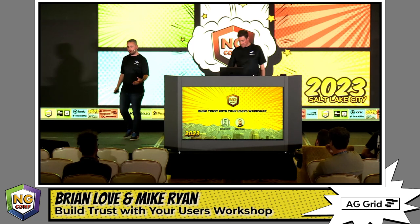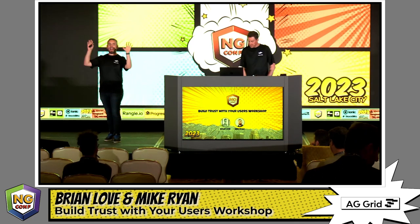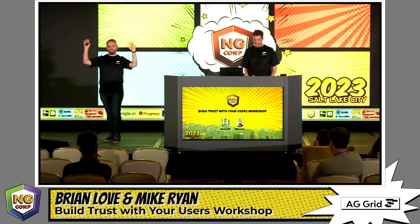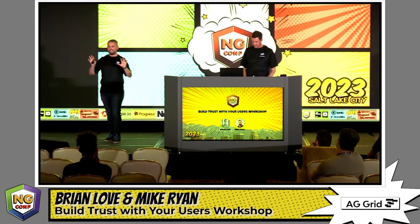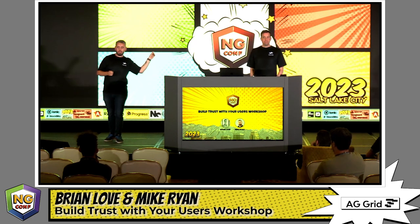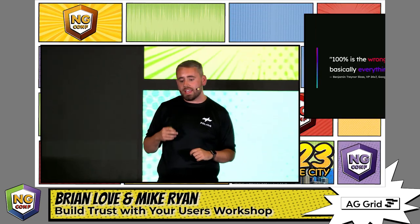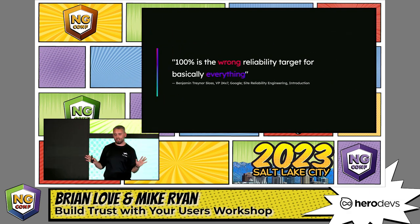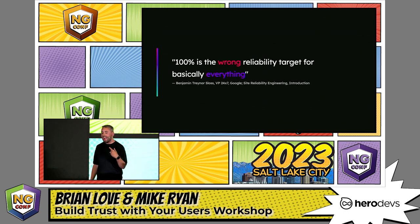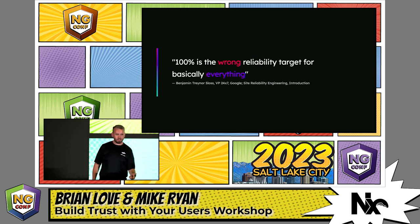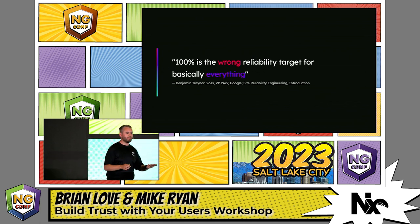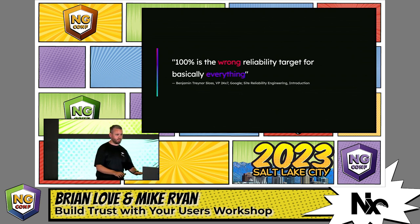You might think you want to set your target as high as possible. But the key realization from Ben Traynor, VP of SRE at Google, is that 100% is just the wrong reliability target straight up. This is true even for things like pacemakers, which people depend on for their health. According to a paper published in 2005, the average reliability of a pacemaker was 99.6%. So 100% is not even achievable for pacemakers — and a lot of us aren't building things as important as pacemakers.